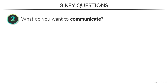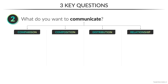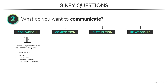Question two is all about understanding what you want to communicate, whether it's a comparison, composition, distribution, or relationship. Comparison visuals are used to compare values over time or across categories. Common visuals here include variations of bar and column charts, along with line or area charts for showing time series. Some less common examples might be a funnel chart if you specifically want to show sequential stages, like the number of applicants who made it through each round of a hiring process.